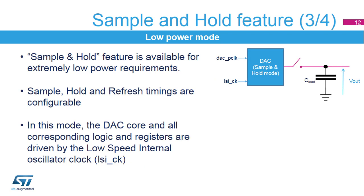When the DAC is configured in sample and hold mode, it is able to generate its converted output voltage and active circuitry can be turned off. In this mode, the DAC core and all corresponding logic and registers are driven by the LSI clock, in addition to the DAC-PCLK clock, allowing usage of DAC channels in deep low-power modes such as stop mode. The logic scheduling refreshes only requires the LSI clock, so the DAC is only active during very low duty cycles, resulting in very low power consumption. The duty cycle program is very flexible and autonomous.